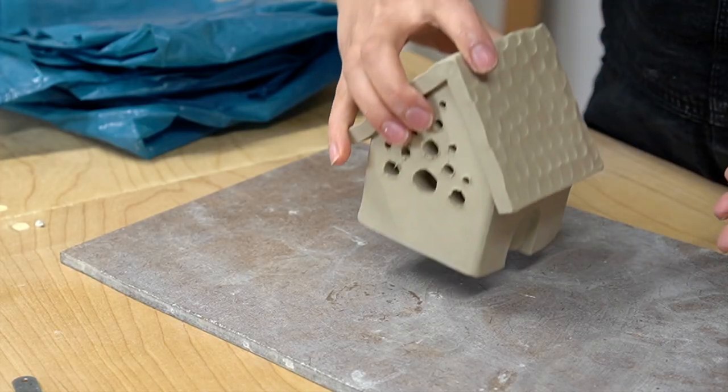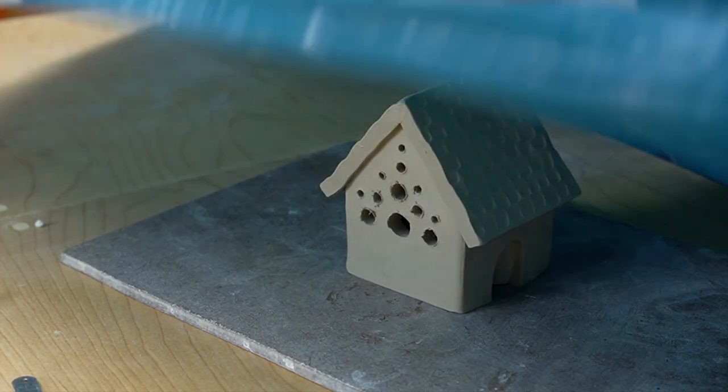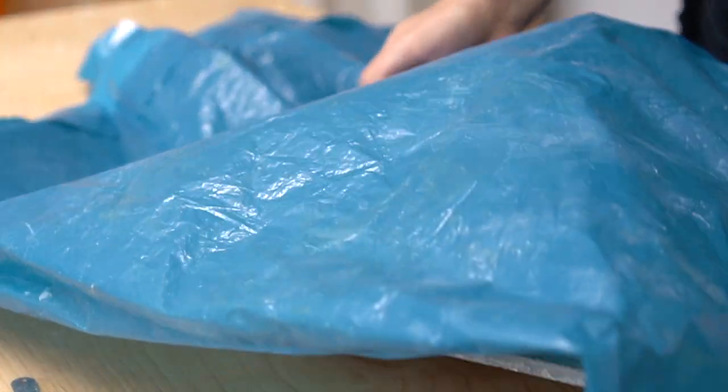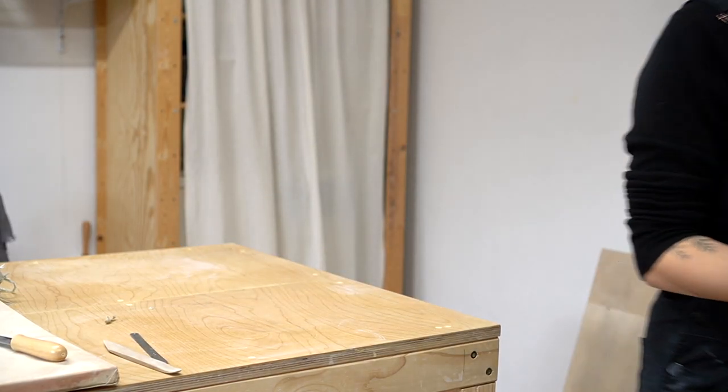With any pot that I'm attaching pieces together I like to wrap them in plastic for 24 hours before letting them dry out. I find that this helps a lot with avoiding cracks.